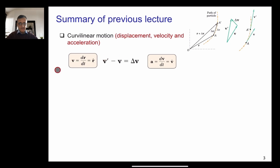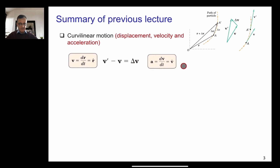Some important equations: the velocity is dr/dt. V and R are bold, meaning they are vectors, but T is not bold — it is a scalar. The equation V dash minus V equals delta V is a vector equation. Finally, acceleration can be written as dV/dt, and acceleration is a vector, as is velocity.